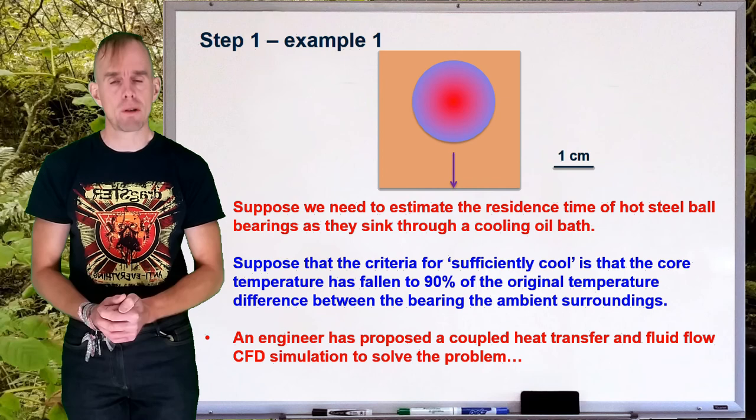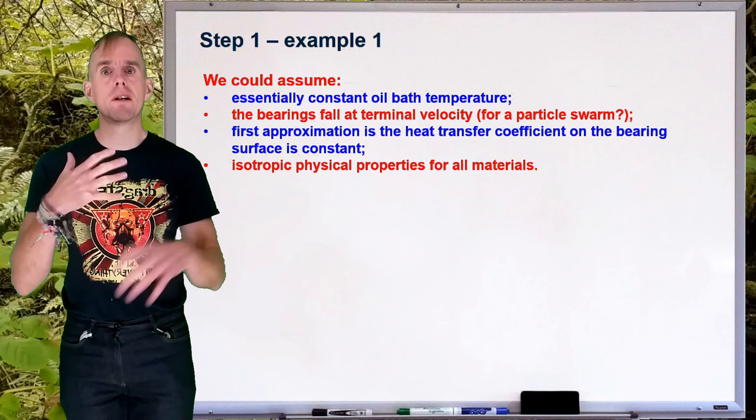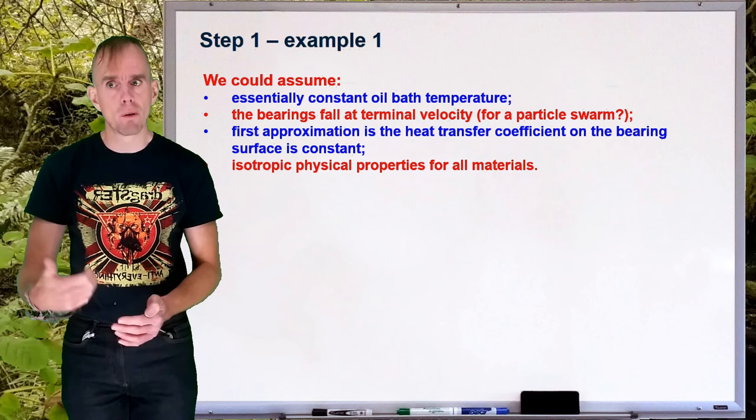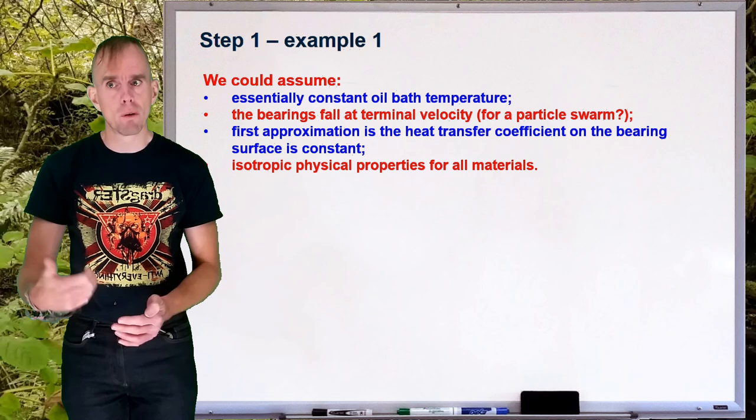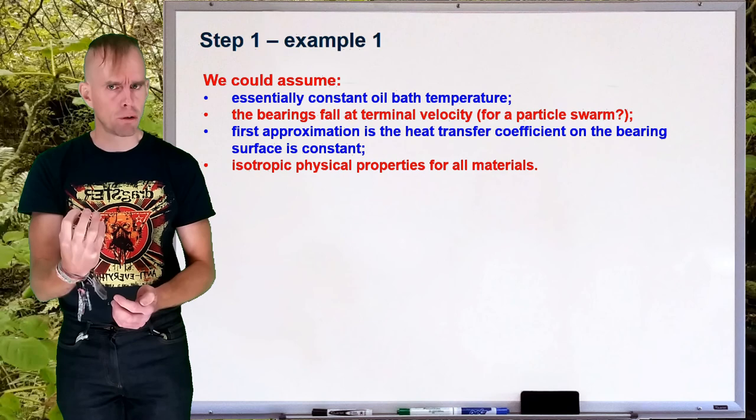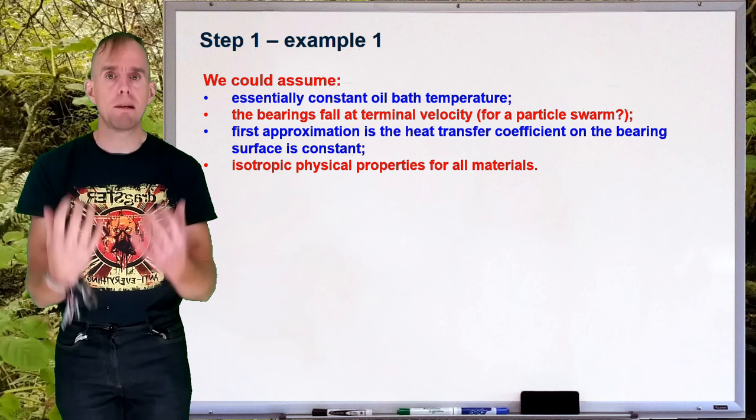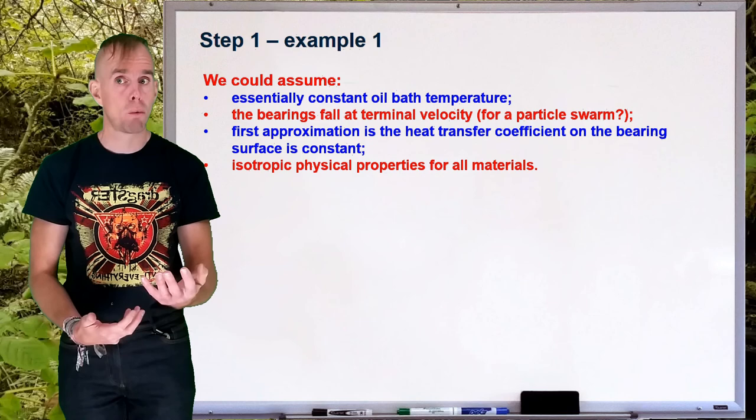Now what we'll do is we'll make some assumptions that we're going to use in the modelling process. We might assume, for example, that the oil bath, the cooling oil bath, is at a constant temperature. We might, furthermore, assume that that ball bearing falls through that oil bath at its terminal velocity. Now, we need to be careful, of course, because the terminal velocity for a single particle falling in a fluid is different than that to many particles falling in a fluid. And so, is this ball bearing on its own or is part of a particle swarm?